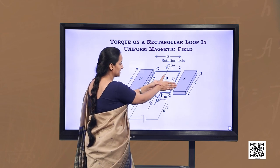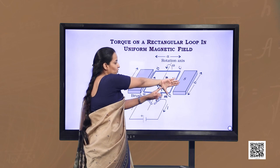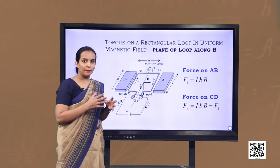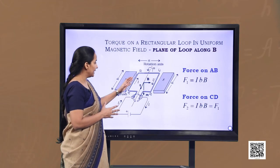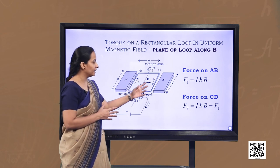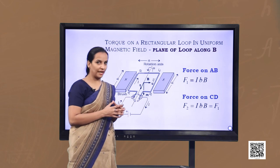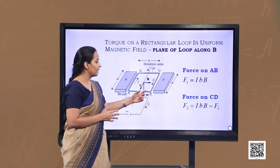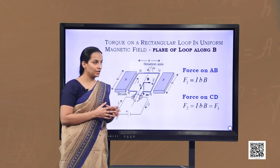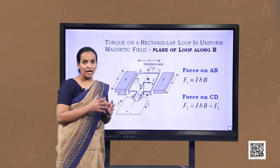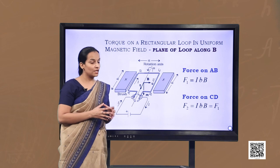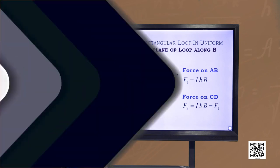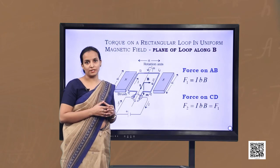In the case of CD, the direction of B is the same but the current is in the downward direction, so the force direction is found from the palm perpendicular. Now regarding magnitude: F1 = I·b·B and F2 = I·b·B. Both forces have opposite directions but equal magnitude, so the net force on the loop is zero.